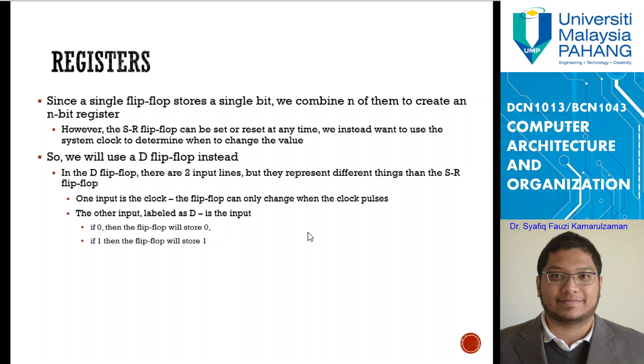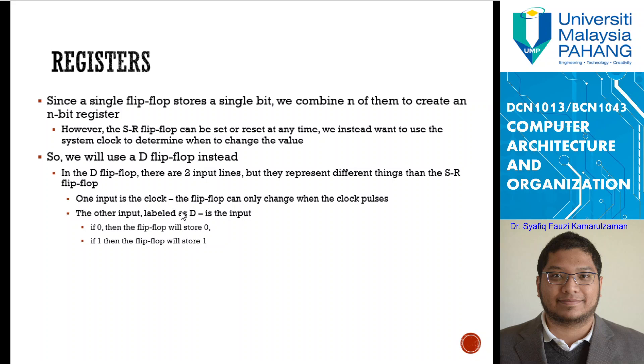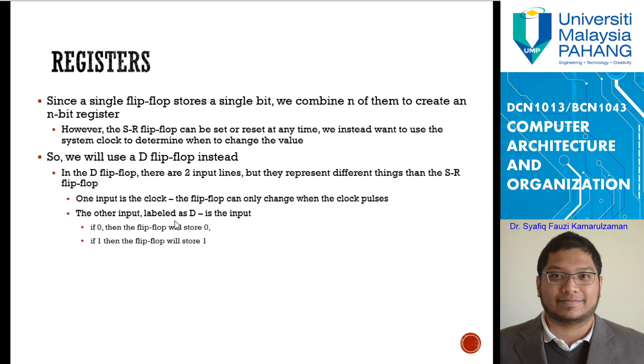In the D-flip-flop, there are two input lines, but they represent different things than the SR flip-flop. One input is the clock. The flip-flop can only change when the clock pulses. The other input labeled as D is the input. When D is 0, the flip-flop will store 0. If D is 1, the flip-flop will store 1.